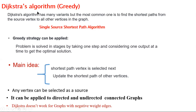The main idea of Dijkstra's algorithm is as follows: the shortest path vertex is selected next, then we update the shortest path of other vertices. This process is called relaxation of vertices. Any vertex can be selected as source, and it can be applied to directed and undirected connected graphs. Dijkstra's algorithm has one disadvantage: it does not guarantee the optimal solution on negative-weighted graphs.